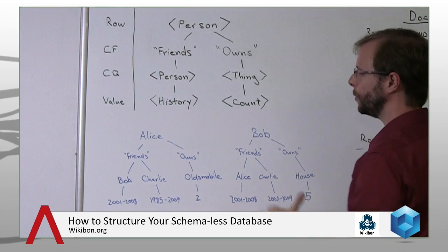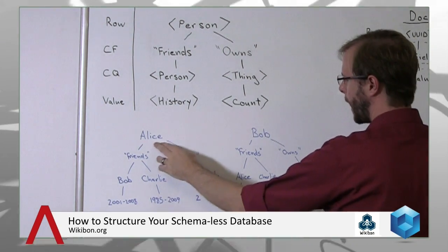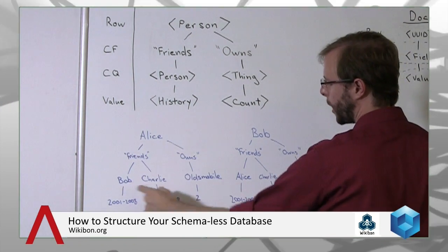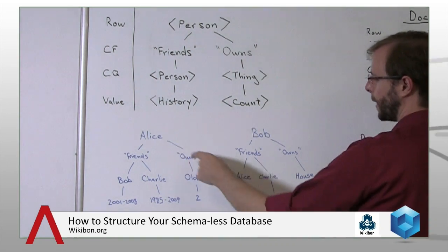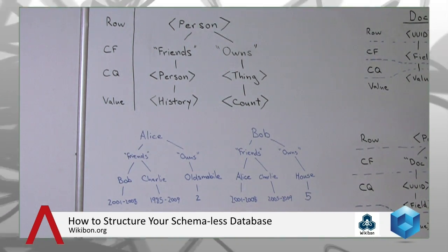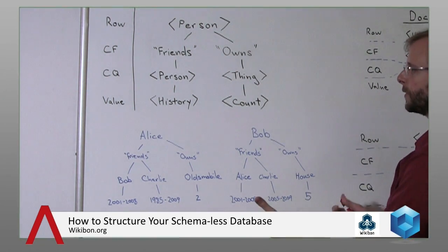If we take this abstract view and instantiate it, here we have Alice and Bob — two people in our person table. Alice has friends: Bob and Charlie, and they have some history. Alice also owns a couple of Oldsmobiles. Bob over here has a couple of friends and owns five houses. What we've done is essentially grouped all of the information associated with those people together so that we can query them all at the same time. If you think about a document store where you might have a hierarchical document with features grouped together underneath the title of that document, we've done a similar thing here.